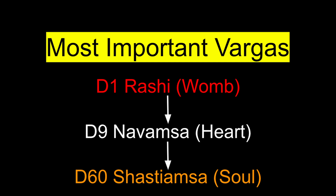Those three key charts are the D1 Rashi chart, the D9 Navamsa chart, and the D60 Shasti Amsa chart, which is what we will be discussing today. The D1 chart is like a womb — this is your birth, how you have come into this life. The D9 chart is like the heart; it gives life to the natal chart, which is why looking at the D9 becomes extremely important. My teacher also describes the D60 chart as the soul of the chart, the very essence of who we are.